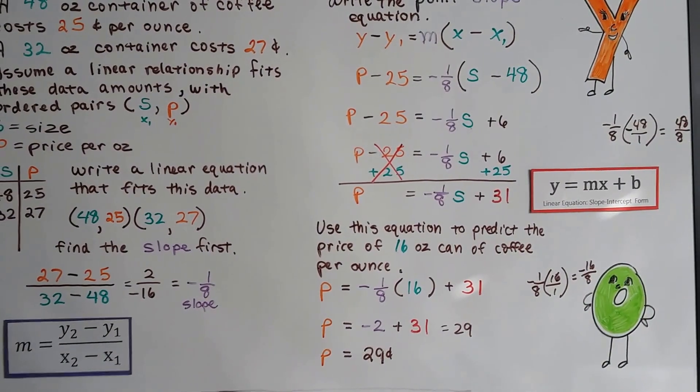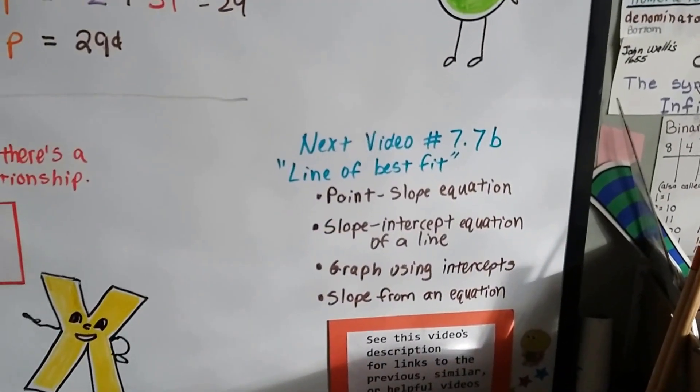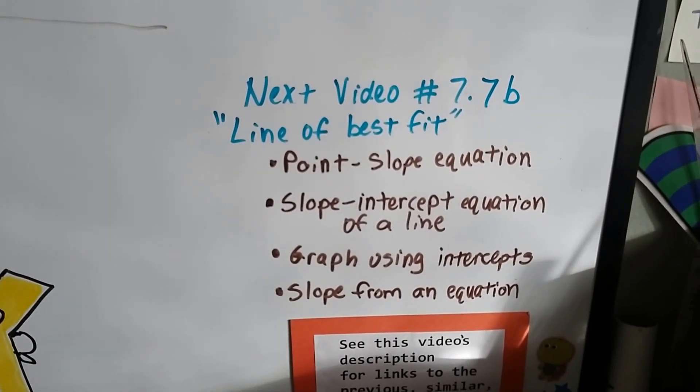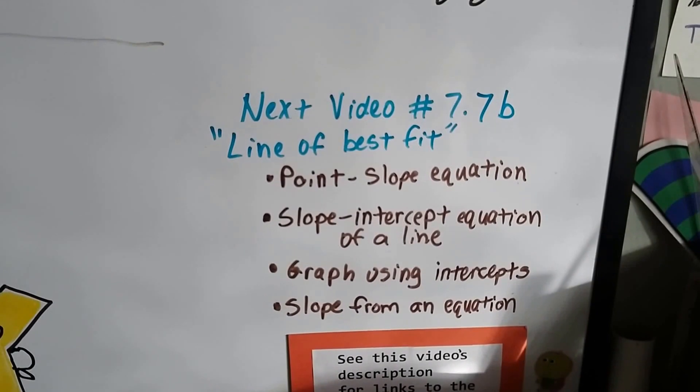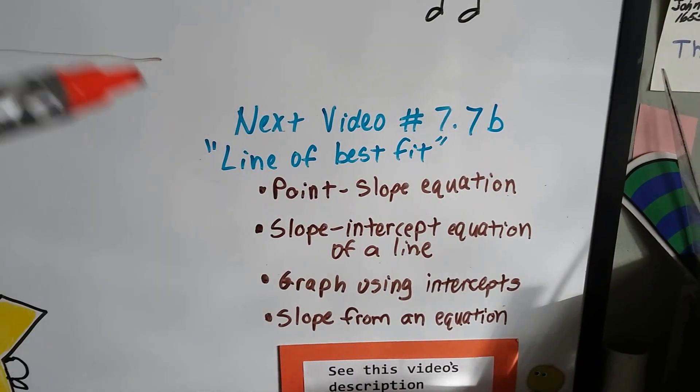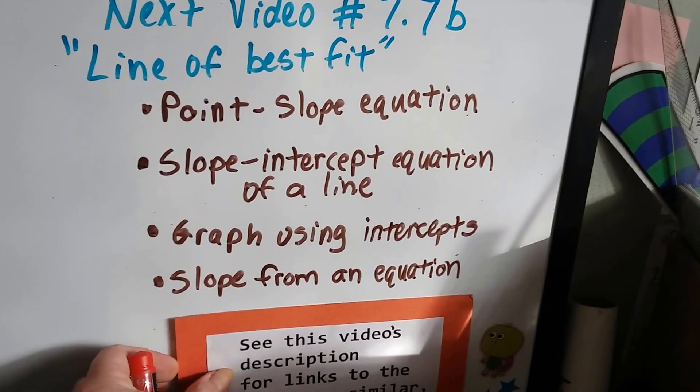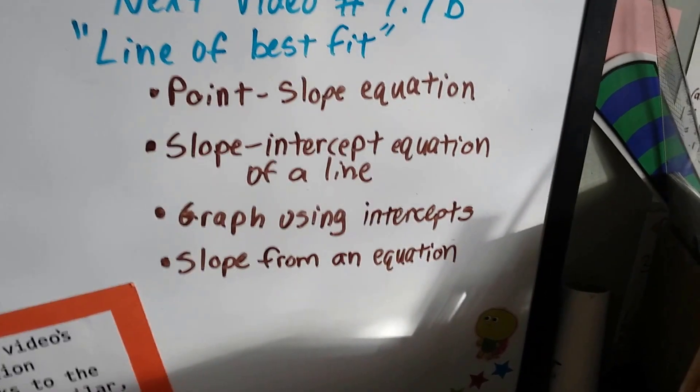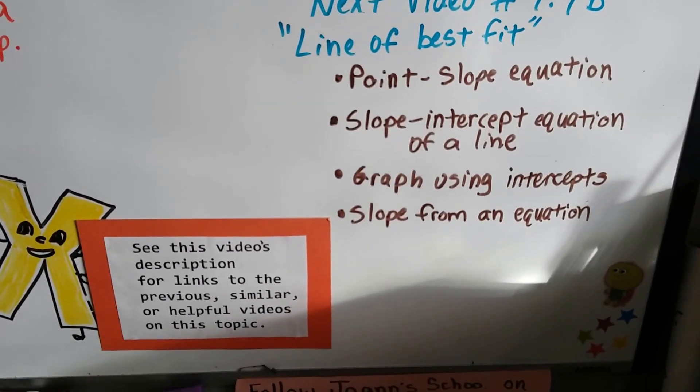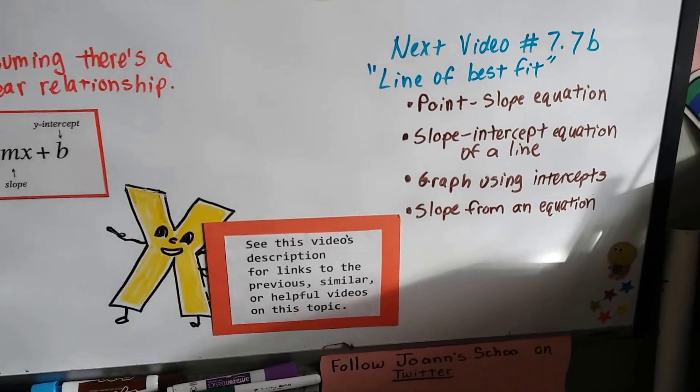All right? So our next video is going to be 7.7b and we're going to talk about the line of best fit. And it's about clusters of data on a graph with several points of information. And you draw a line that fits the data best. Okay? If you want to go back in this video's description, there's going to be links to similar and previous videos on point-slope equation, slope-intercept, equation of a line, graphing using intercepts, and slope from an equation. All of those will be in here in the link. The links will be in the description. Okay?